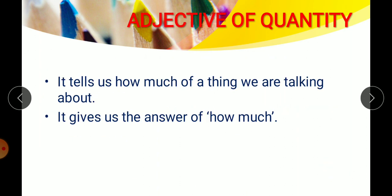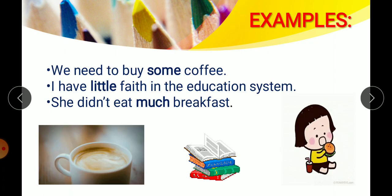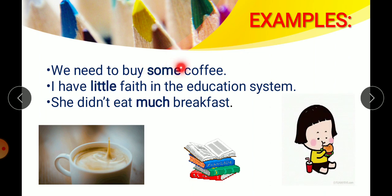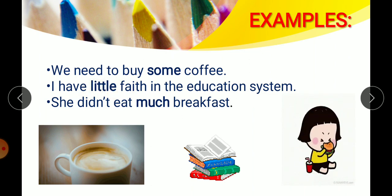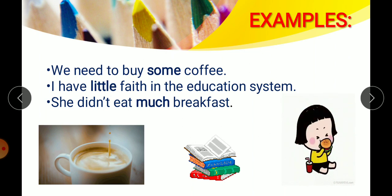Coming to adjective of quantity. Quantity means how much. It tells us how much of a thing we are talking about — it gives us the answer of how much. For example: 'We need to buy some coffee.' How much coffee? Some. So 'some' is adjective of quantity. 'I have little faith in the education system.' How much faith? Little. So 'little' is adjective of quantity. 'She didn't eat much breakfast.' How much breakfast? Much. So 'much' is adjective of quantity.